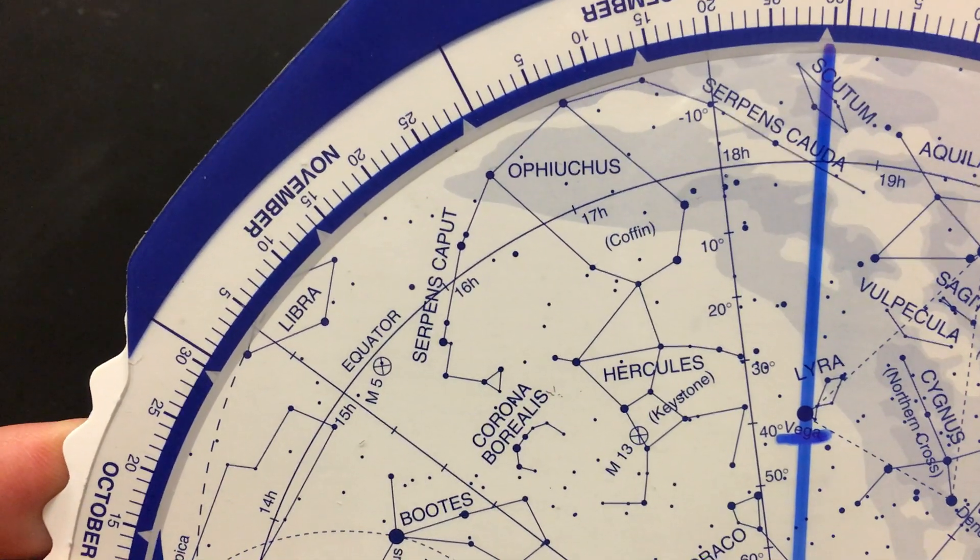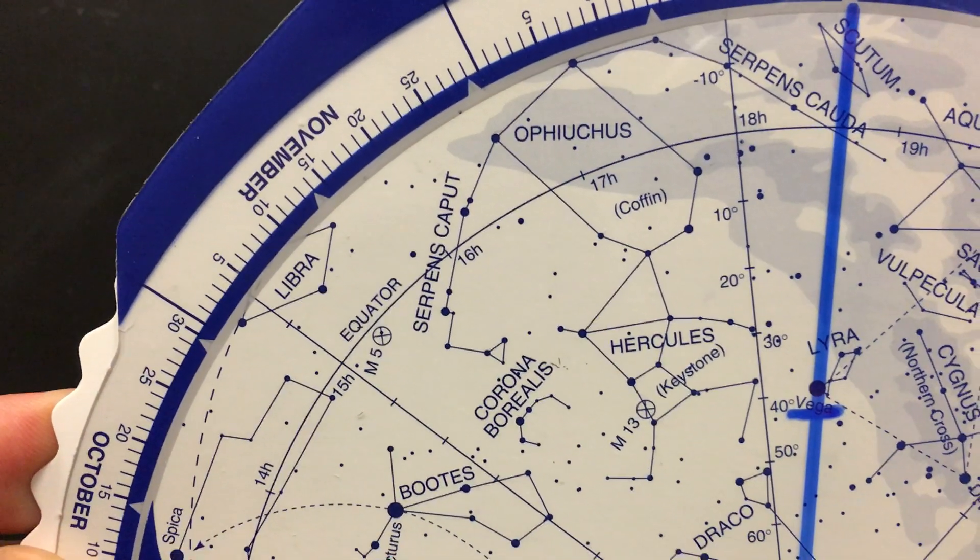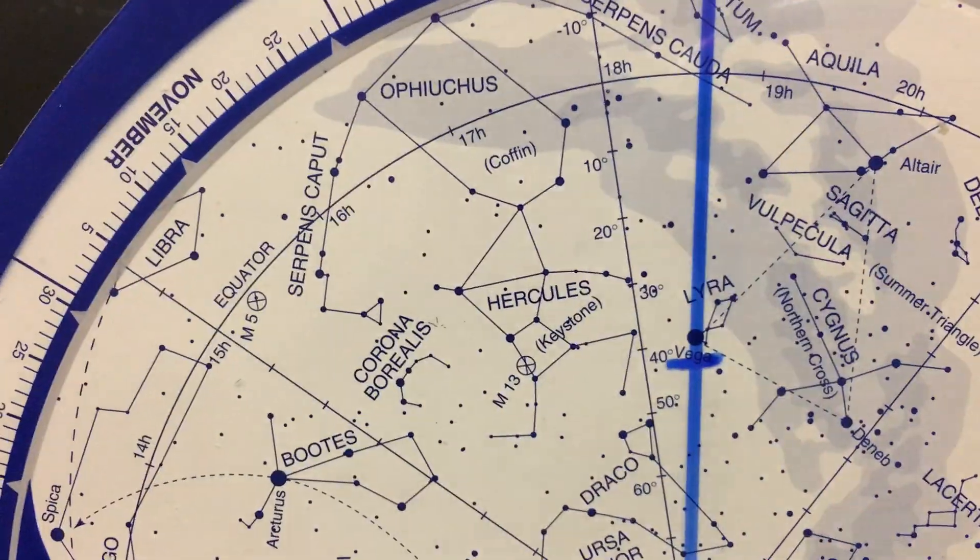So its right ascension is - I'm sorry - 18 hours 35 minutes. So it's right ascension 18 hours 35 minutes and declination of about 39. Thank you.